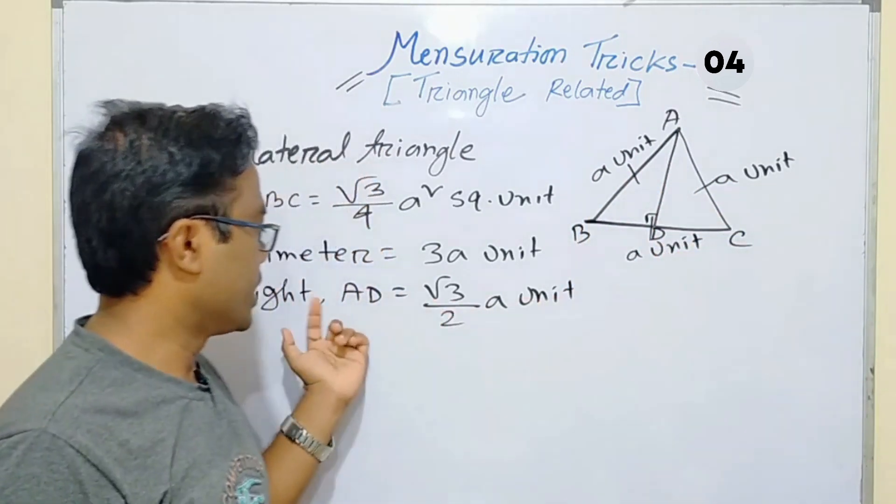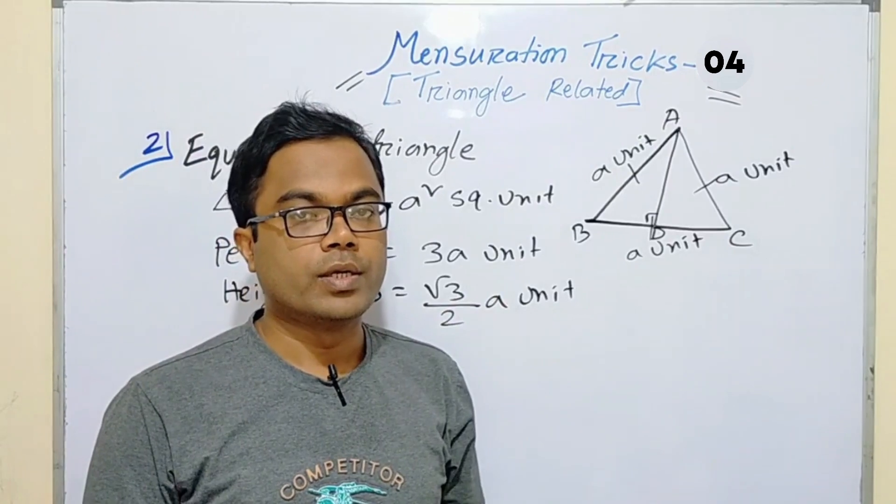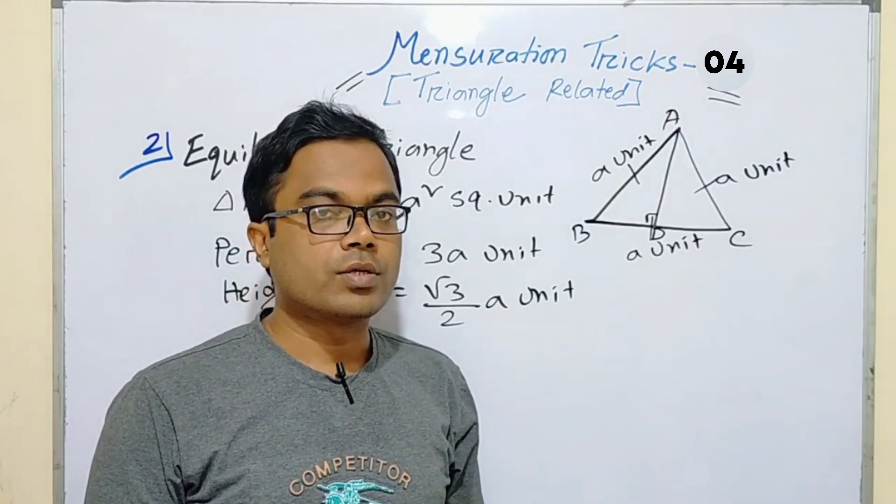AD is the height. I don't have the hypotenuse directly, so I apply the Pythagorean theorem and I can easily find the height. AD equals root 3 by 2 units.